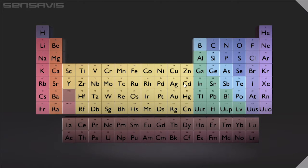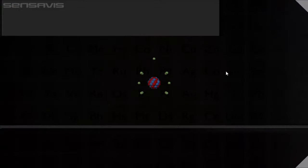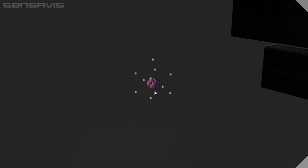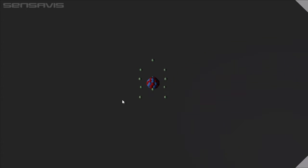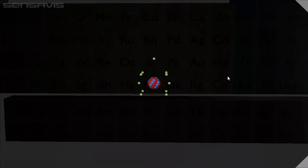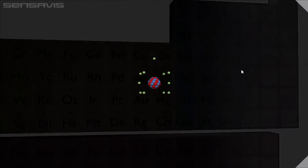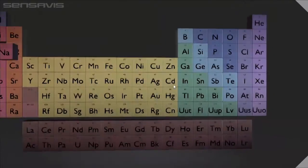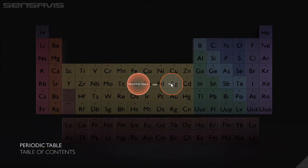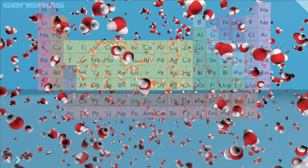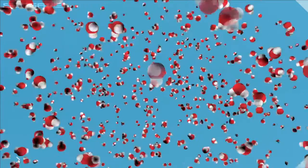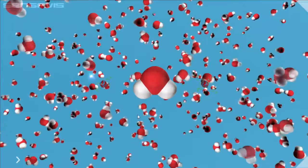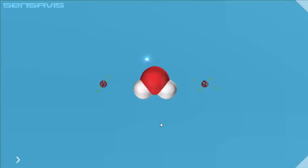In chemistry on the periodic table, we can choose whichever element we like. Look at the electrons, protons and neutrons. We can talk about atoms and we can talk about how ions are constructed. Or we can go to chemical reactions and see what happens when two elements become a new substance like salt.